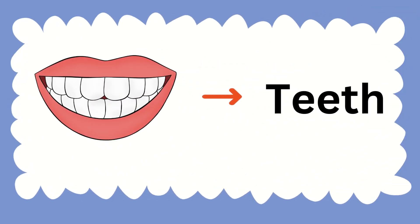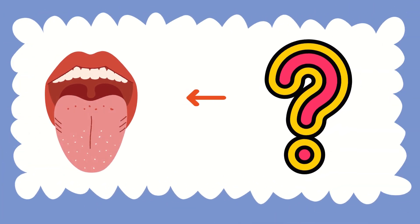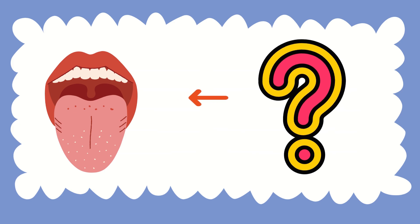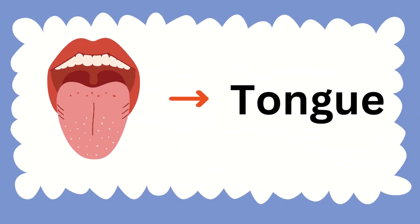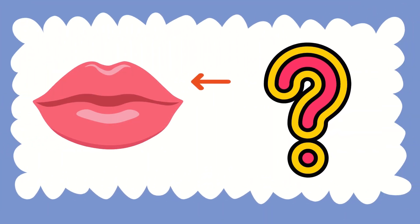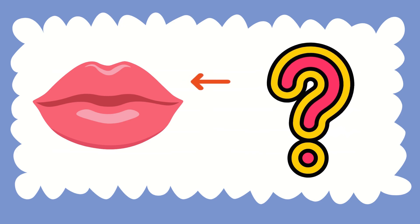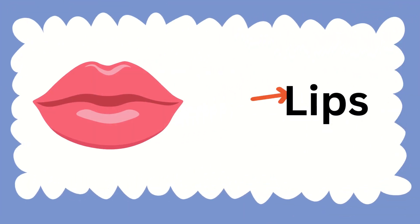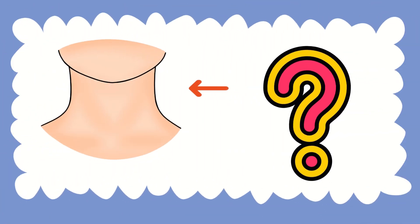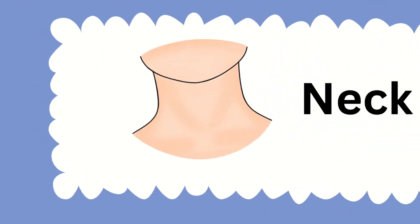Let's look at the next picture — these are teeth. Let's look at the next picture. We taste our food with this part. What is it called? You are absolutely right — it is called tongue. Let's see the next body part. This is called neck.